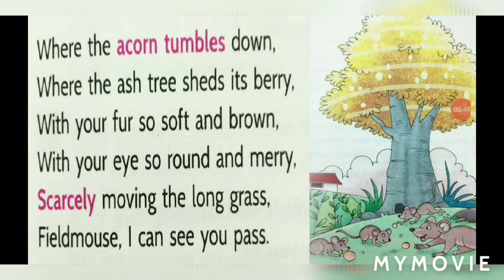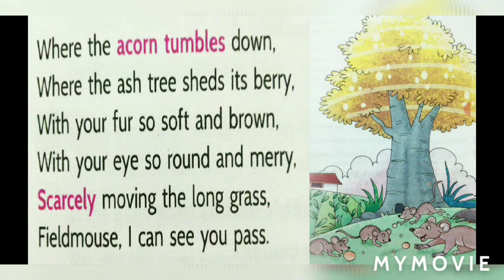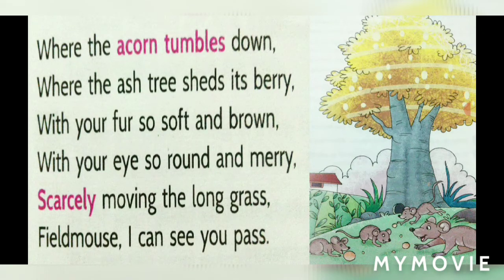This poem is based on a field mouse, which has a soft fur and round eyes, and moves through the long grass, when the acorn or oak-nut fruit and berry fall on the ground. The mouse is seen at this time, as it comes out of its hole to eat the fruit.